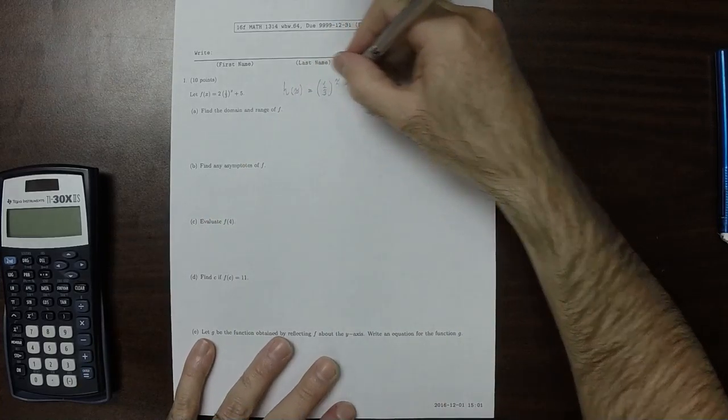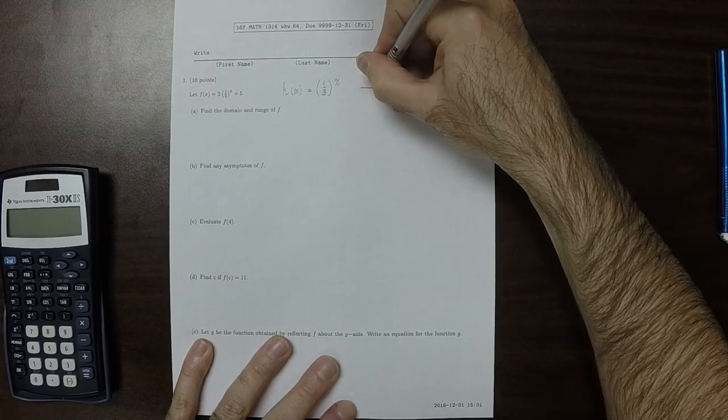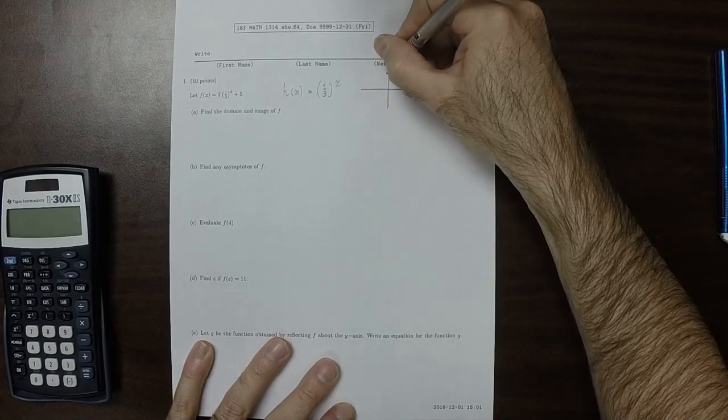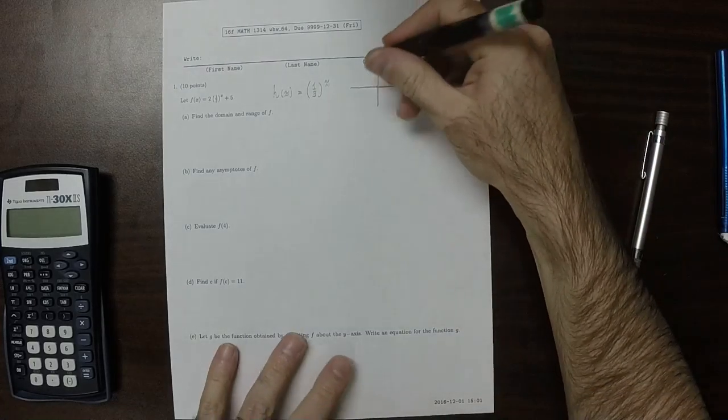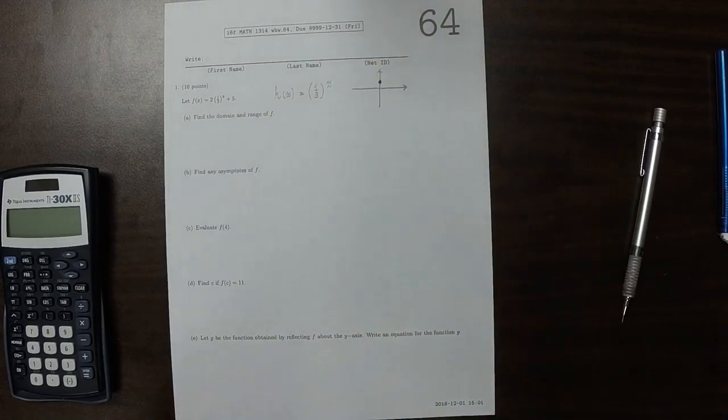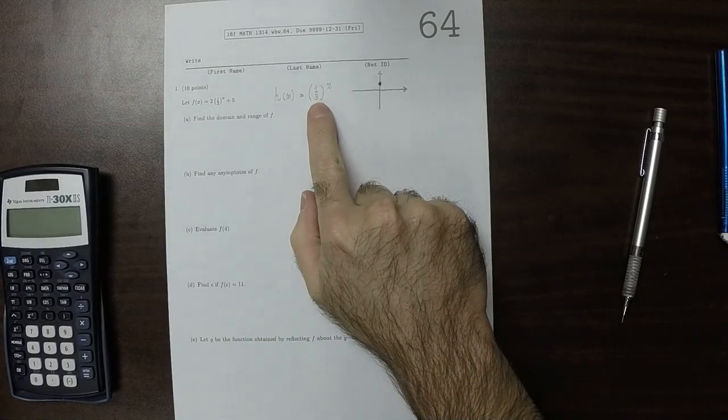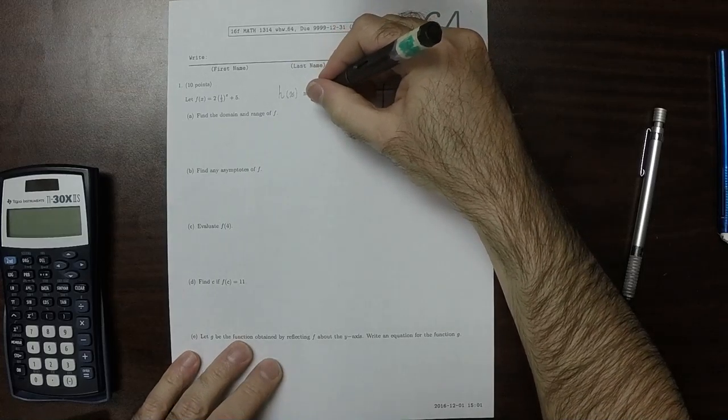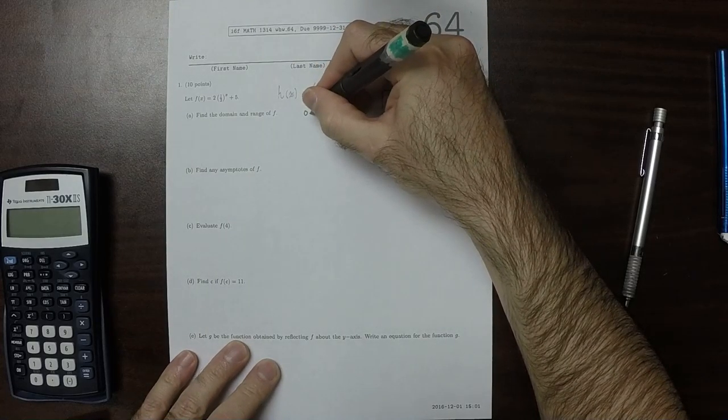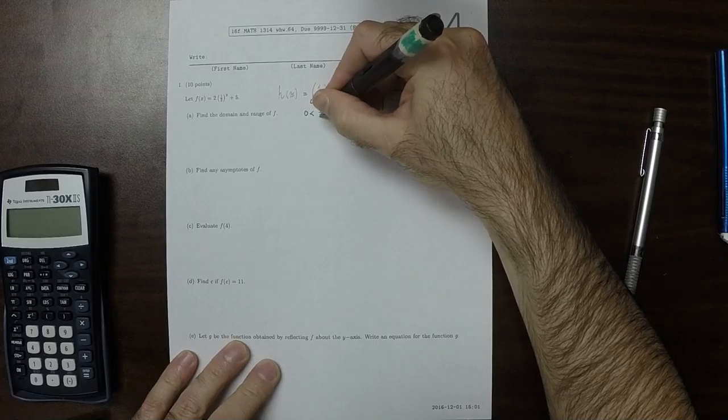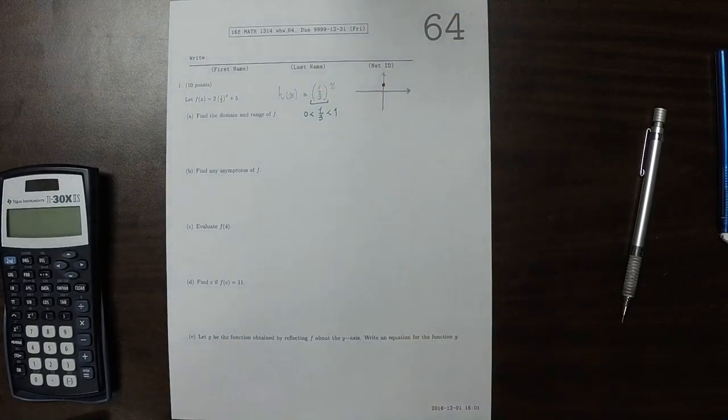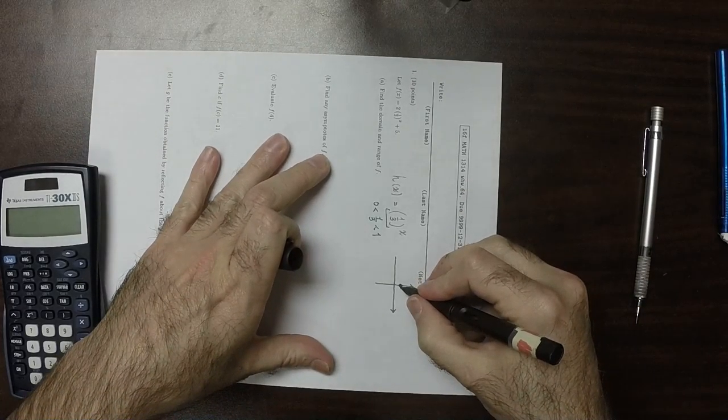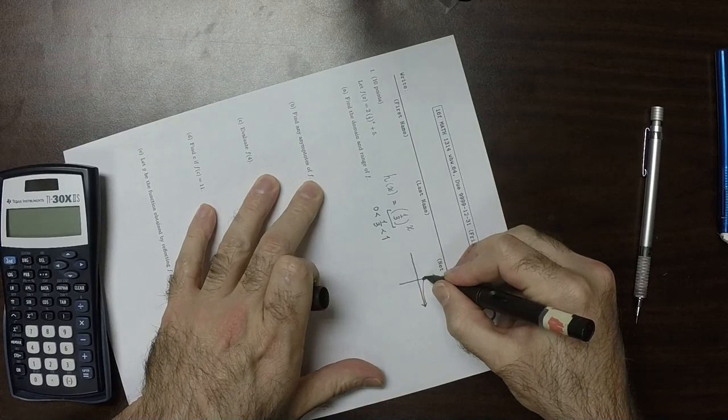This function looks like the following: it goes to the point (0,1). Because the base is 1/3, this base is between 0 and 1, that means this exponential h will decay to the right and increase to the left.